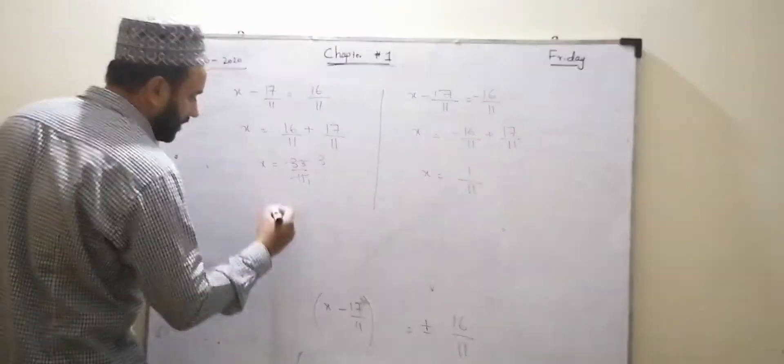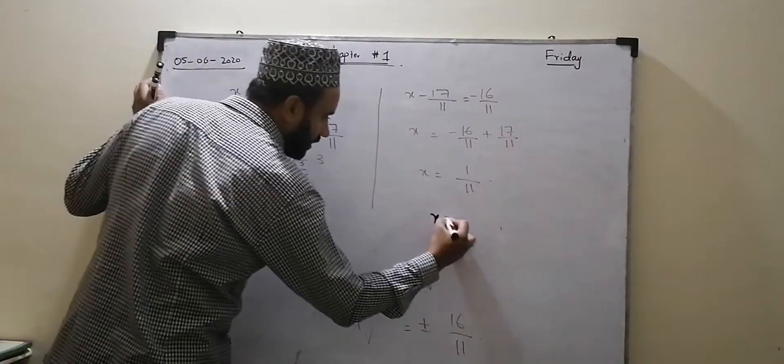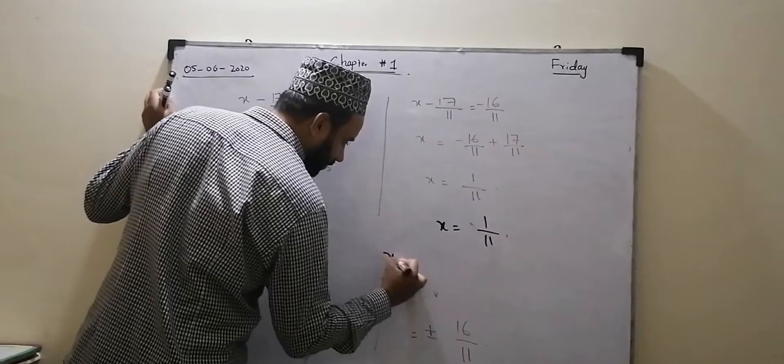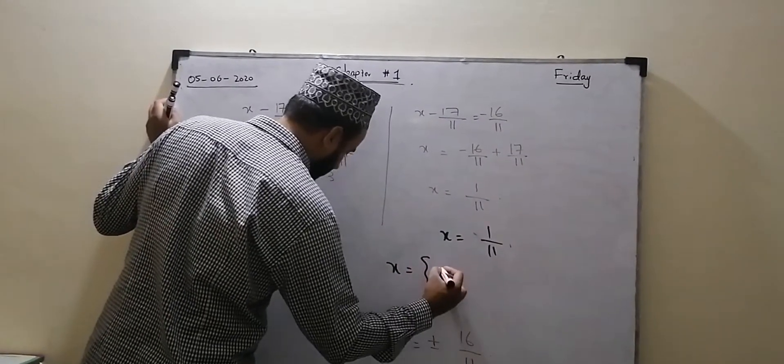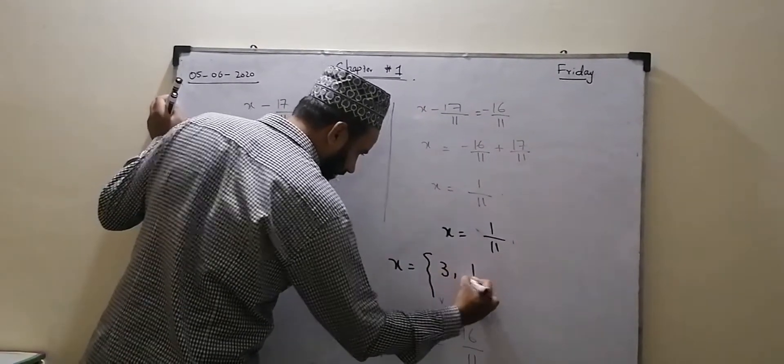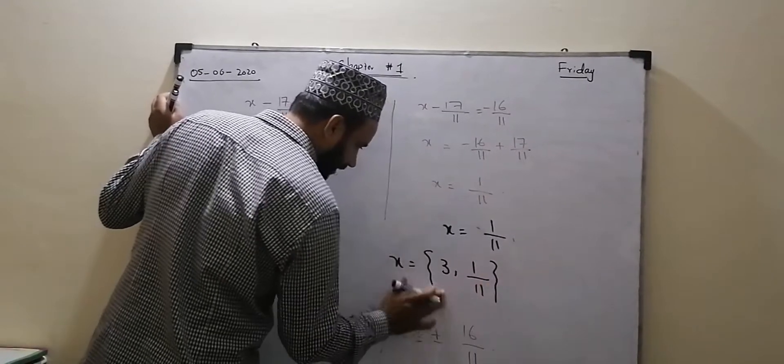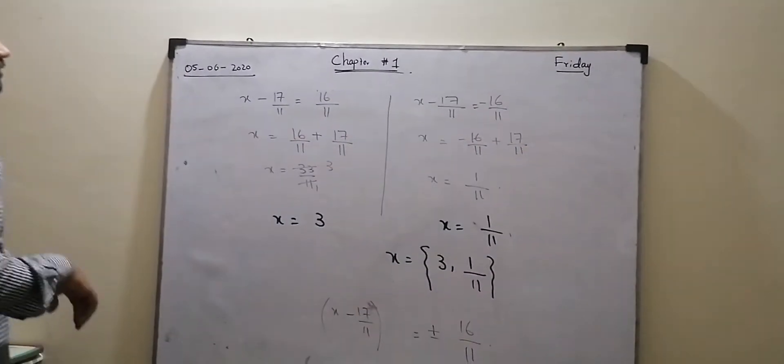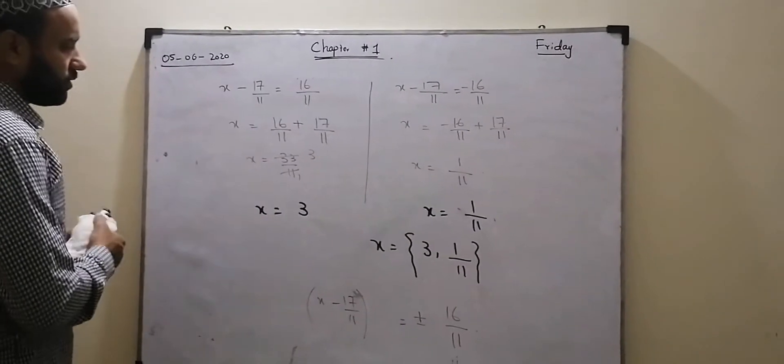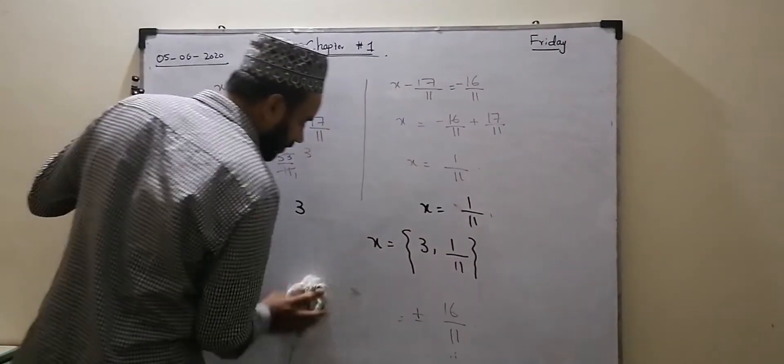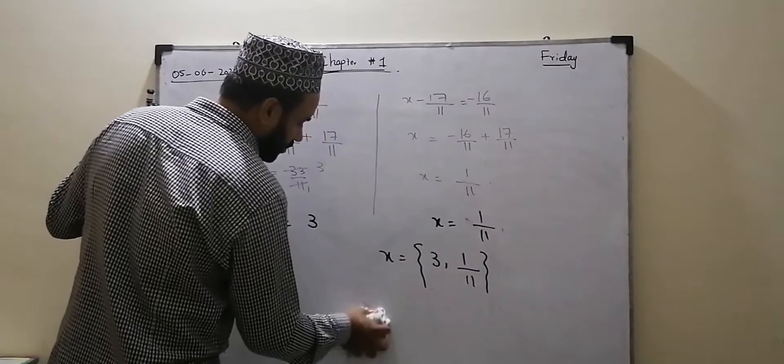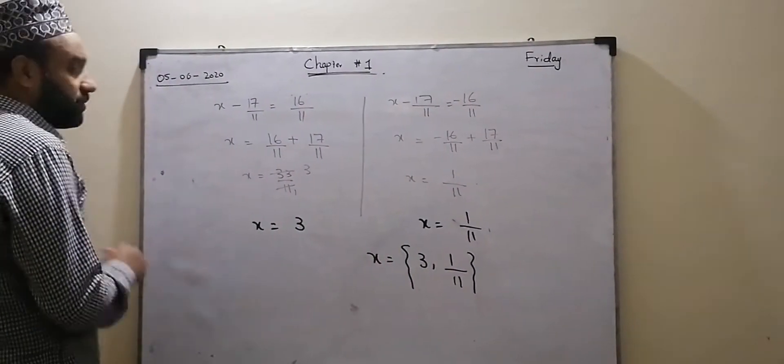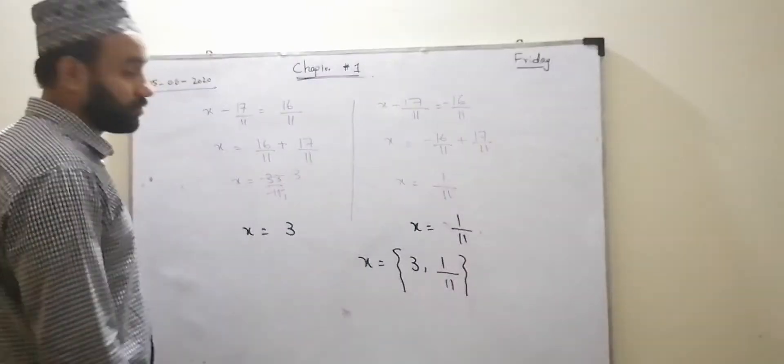So by this we can say x₁ answer is 3 and x₂ is 1 by 11. So the solution set is {3, 1/11}. Sometimes if factorization is tough, then we use the completing square method. The completing square method was applicable, easily doable, and we have the answer. Now we will do the rest of the question. Thank you so much.